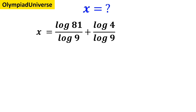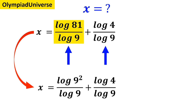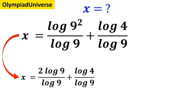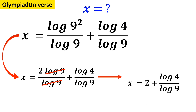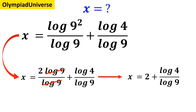As you can see on this screen, we have two fractions and we want to simplify each one as much as possible. Starting with the fraction highlighted in yellow, we write this expression as x equals log of 9 to the power of 2 over log of 9 plus log of 4 over log of 9, which simplifies to x equals 2 times log of 9 over log of 9 plus log of 4 over log of 9. Now the log of 9 terms cancel out, and this expression simplifies to x equals 2 plus log of 4 over log of 9.